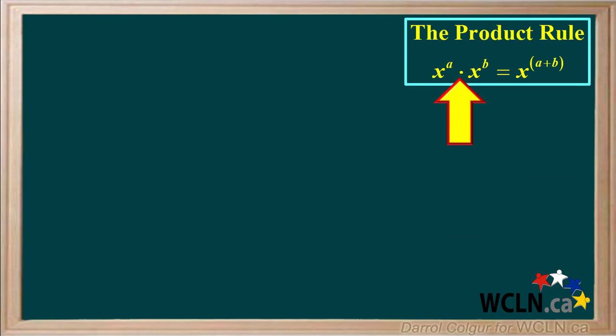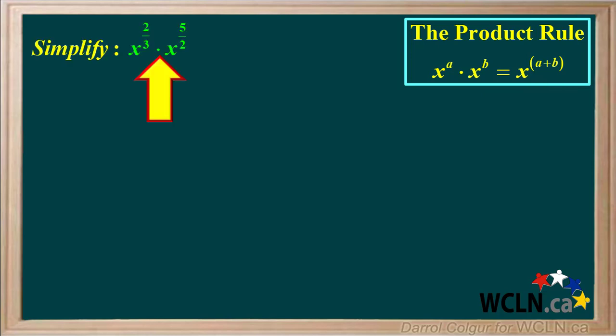The product rule says when we multiply the same base with exponents, we add these exponents to get the exponent in the product. For example, we're asked to simplify x to the 2 thirds times x to the 5 halves. We add the exponents 2 thirds plus 5 halves.